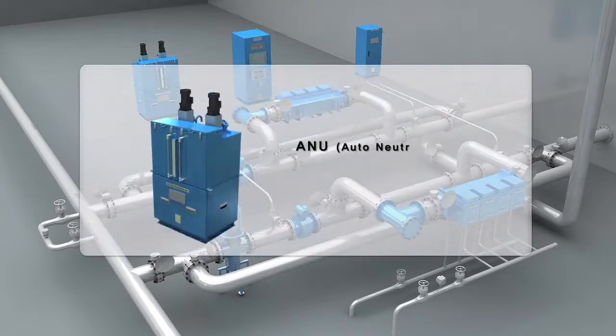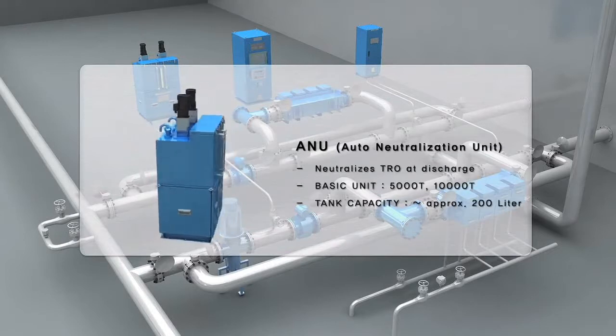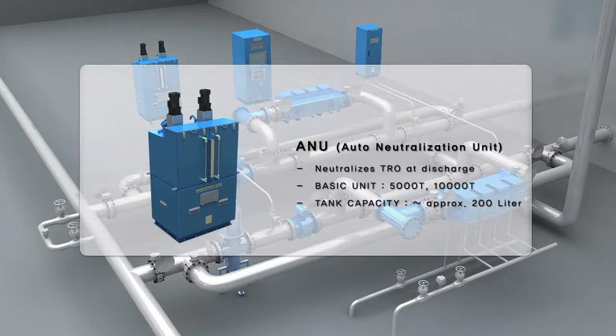ANU is designed to neutralize any remaining residual TRO prior to discharge. It is used during de-ballasting and stripping only.